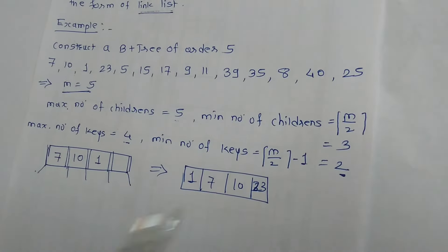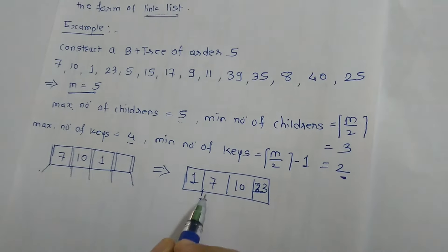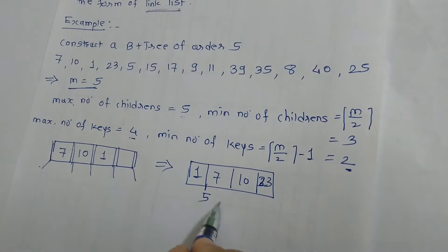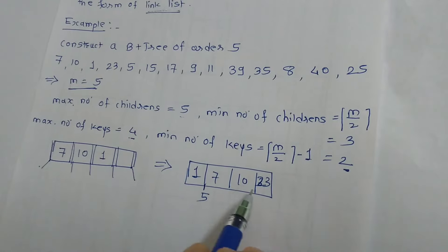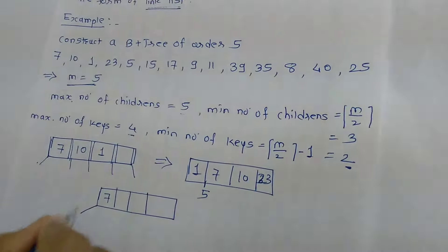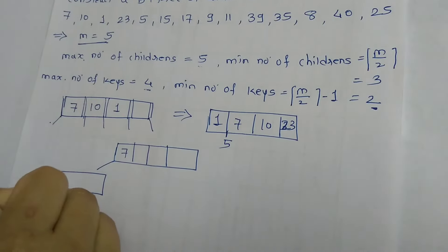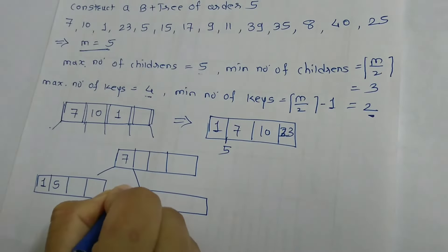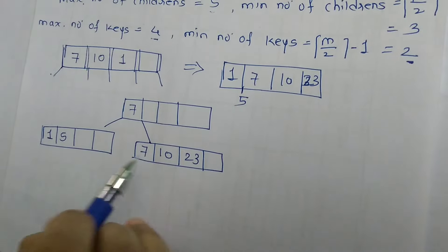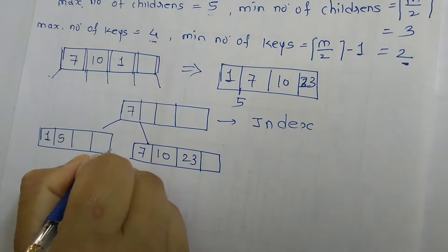The next key is 5. Find the position of 5 — according to ascending order, 5 will come between 1 and 7. But we can store only 4 keys in one node, so with 5 keys I cannot store 5 here. I have to apply a rule: take the middle of the 5 keys — the middle key is 7. So 7 will go up and become the root. This is not actual data storing; keys are stored in leaf nodes only. The left child of 7 will be 1 and 5, and the right child of 7 will be 7, 10 and 23. Here only indexes are stored in internal nodes, and leaf nodes are linked by a linked list.